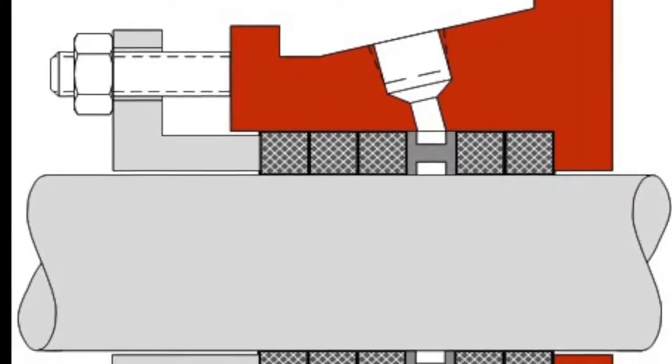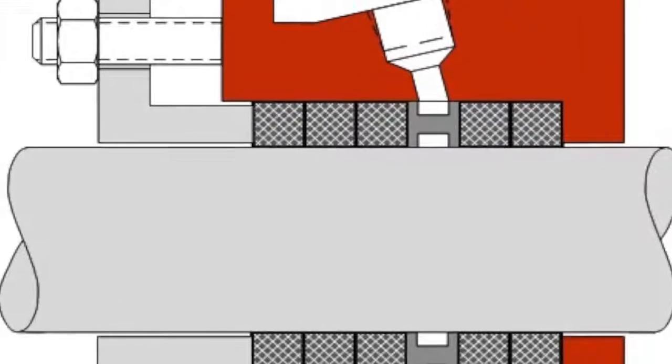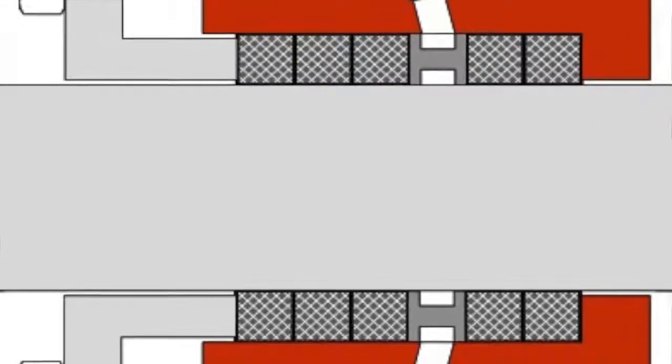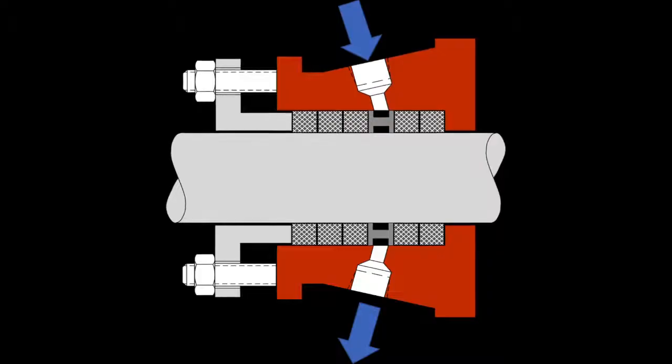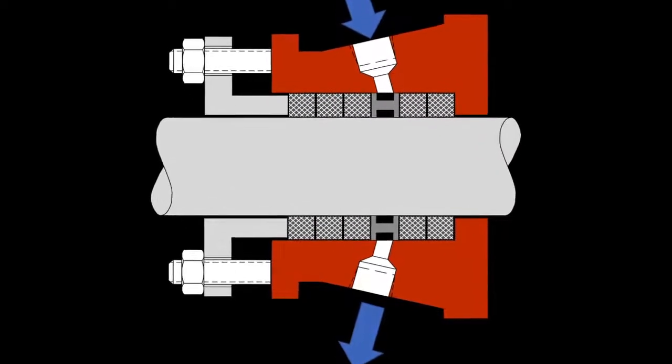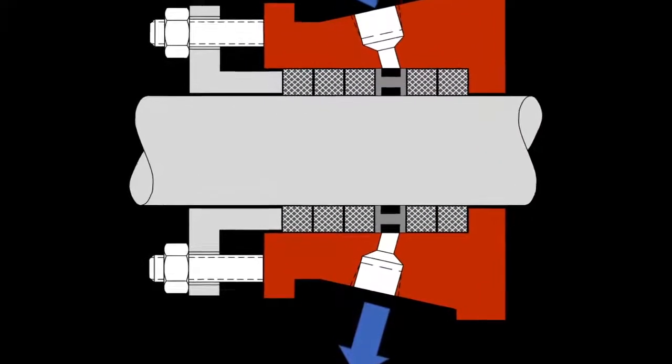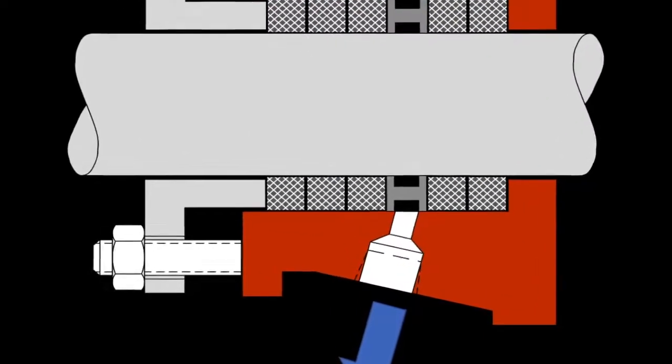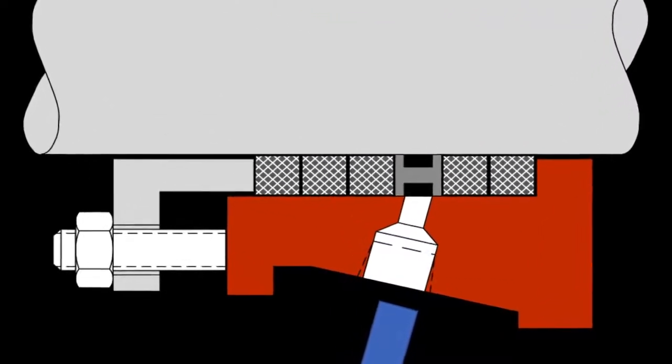One issue that's still seen in the field has to do with misunderstanding lantern ring ports. Sometimes a pump will have two or more lantern ring ports. They were designed to get more flow to fill a larger cavity. Many times people are confused and assume this is a flow in flow out pattern that's sometimes seen in a mechanical seal.